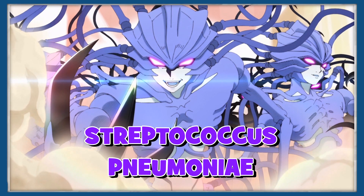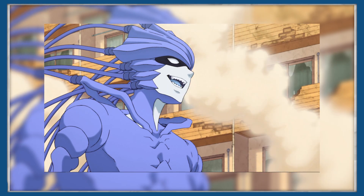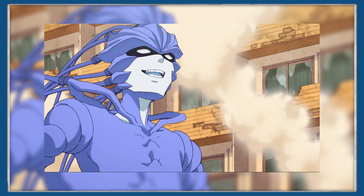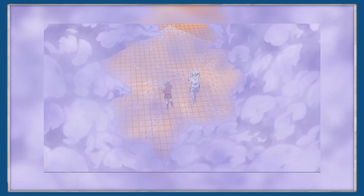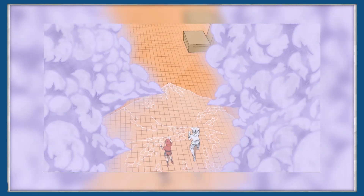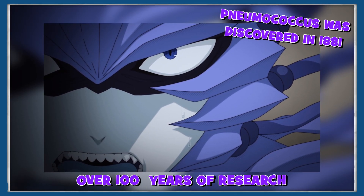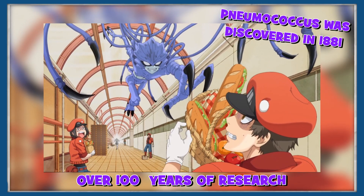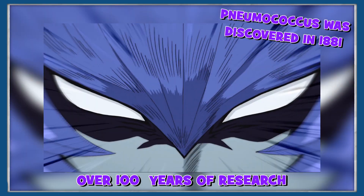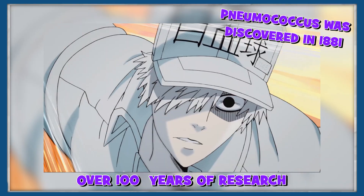Streptococcus pneumoniae, otherwise known as the bacteria that causes pneumonia. Cells at Work represents pneumococcus as a humanoid virus with a large number of abilities to help it escape detection and to protect it from the aggressive pursuit of white blood cells. Fortunately, we have over 100 years' worth of research and intense study to get an understanding of the fundamental aspects of its physiology, pathogenesis and immunity, so there's plenty to cover in this short video.